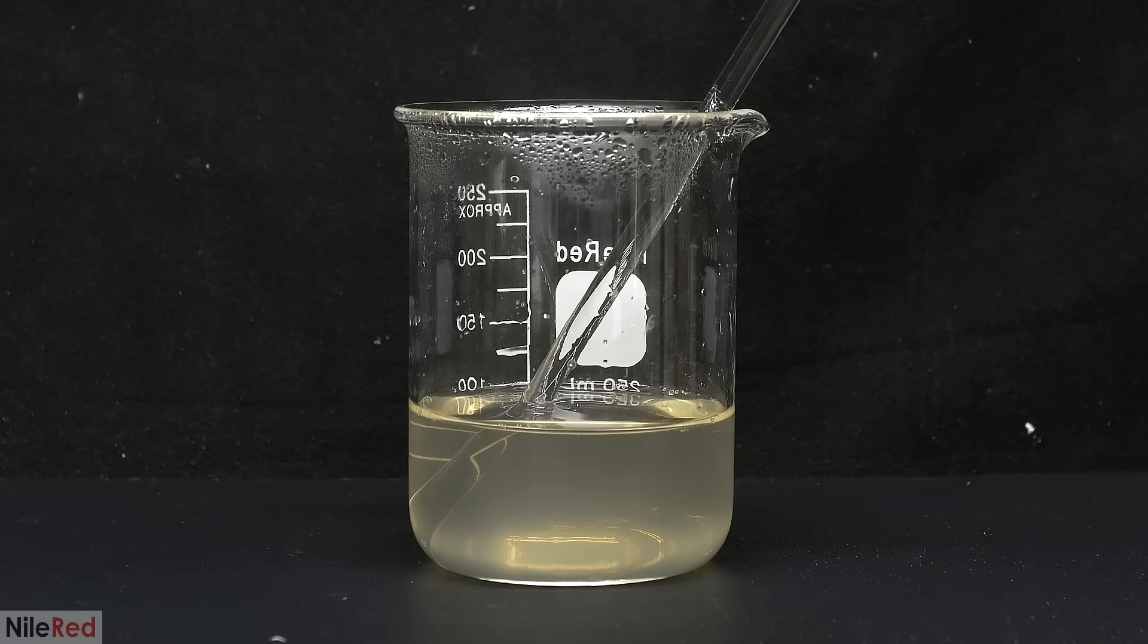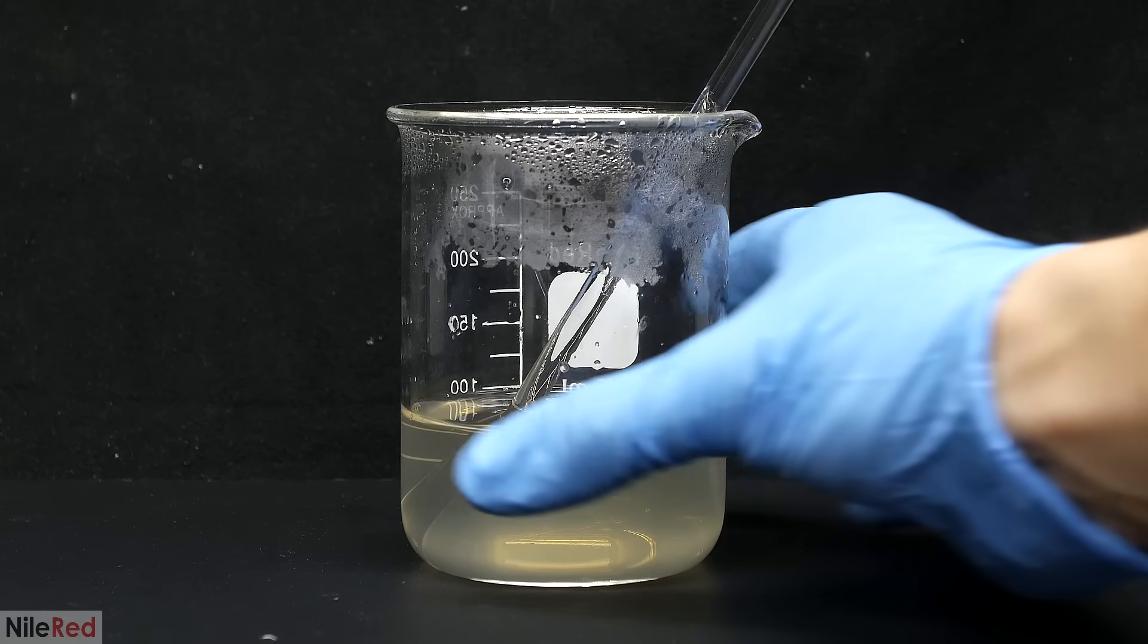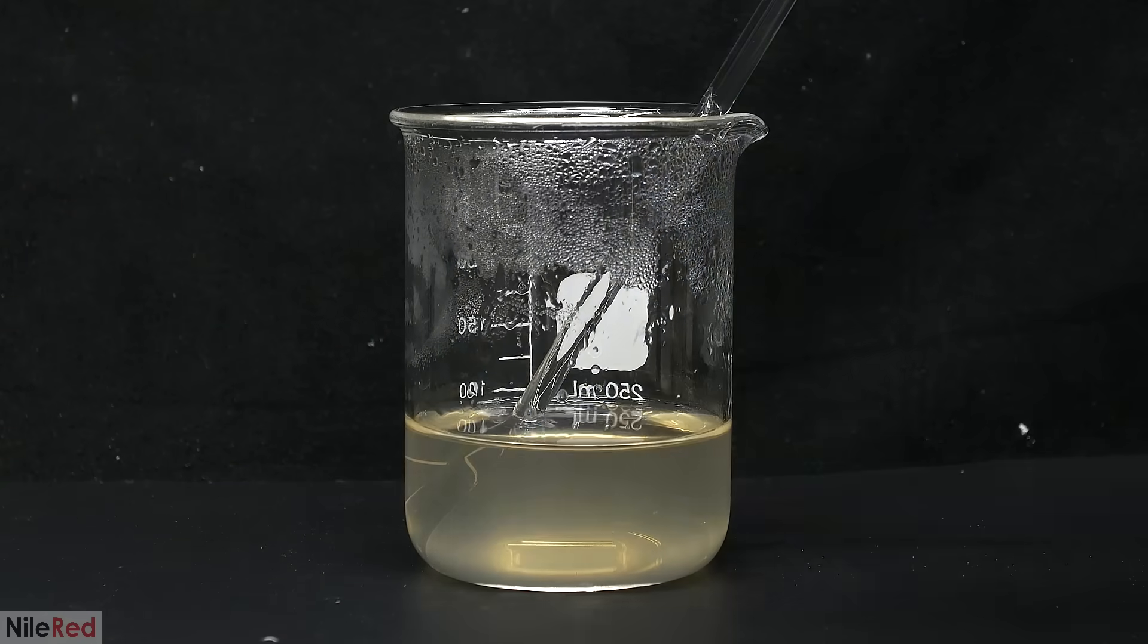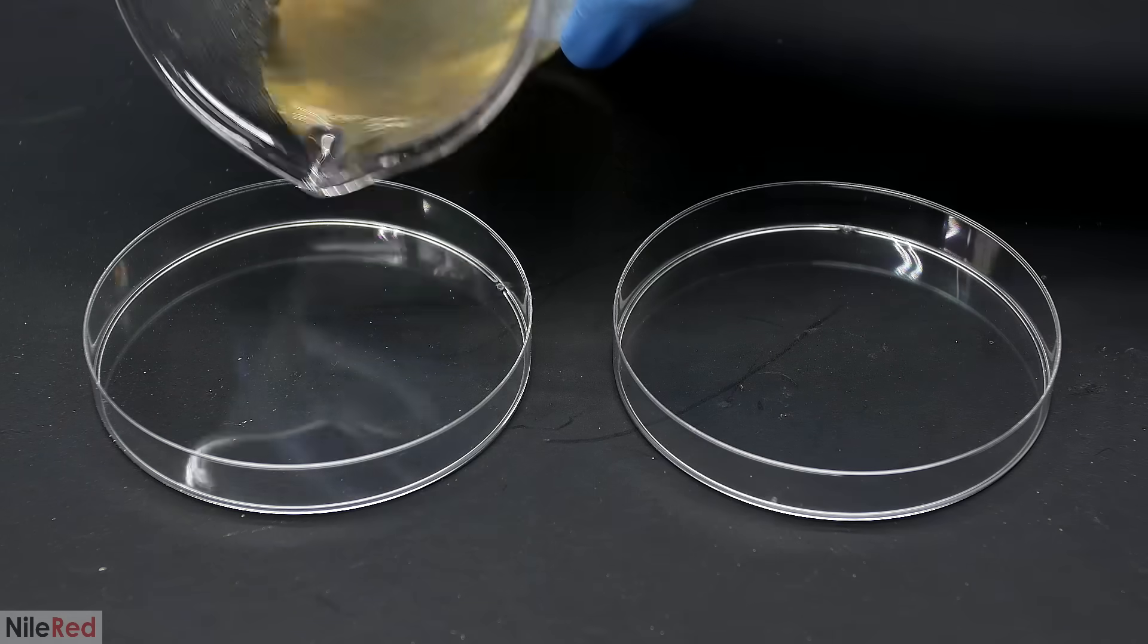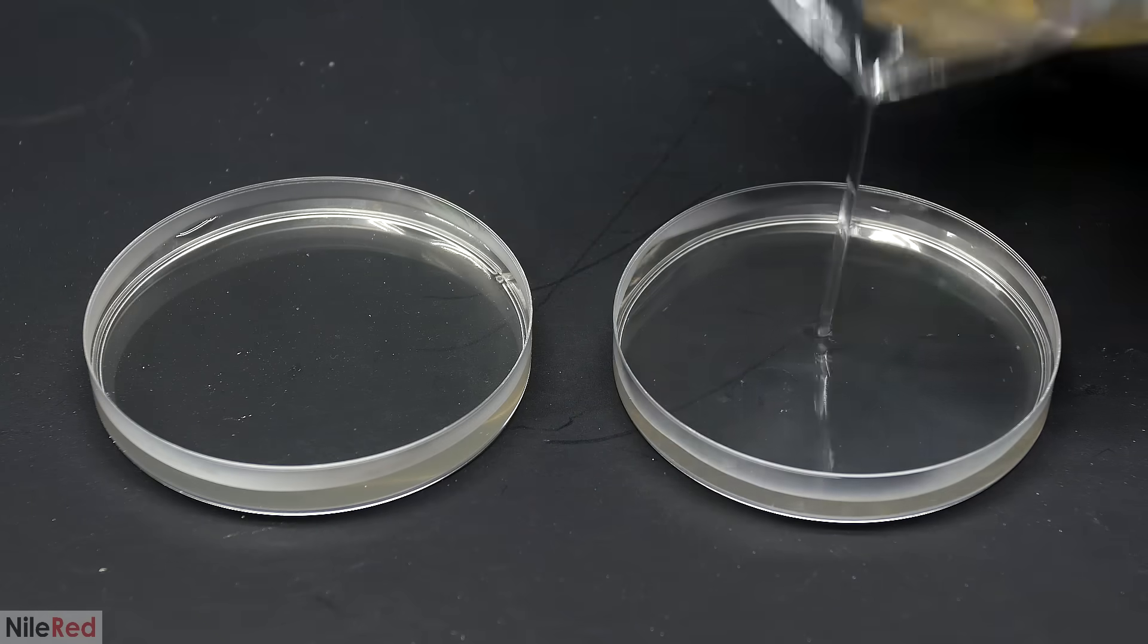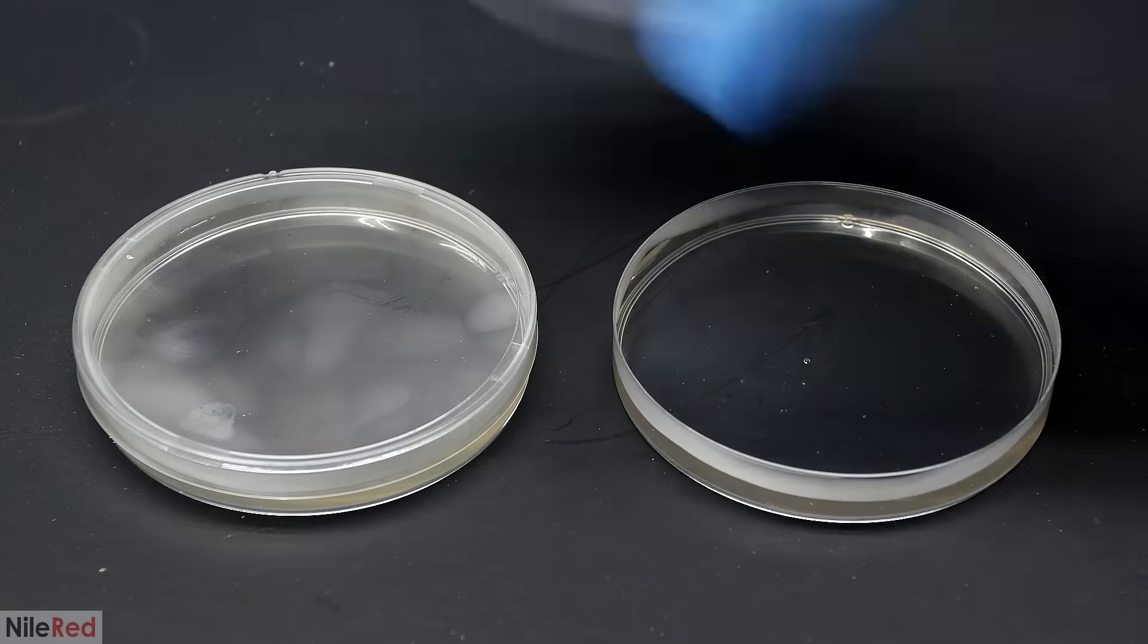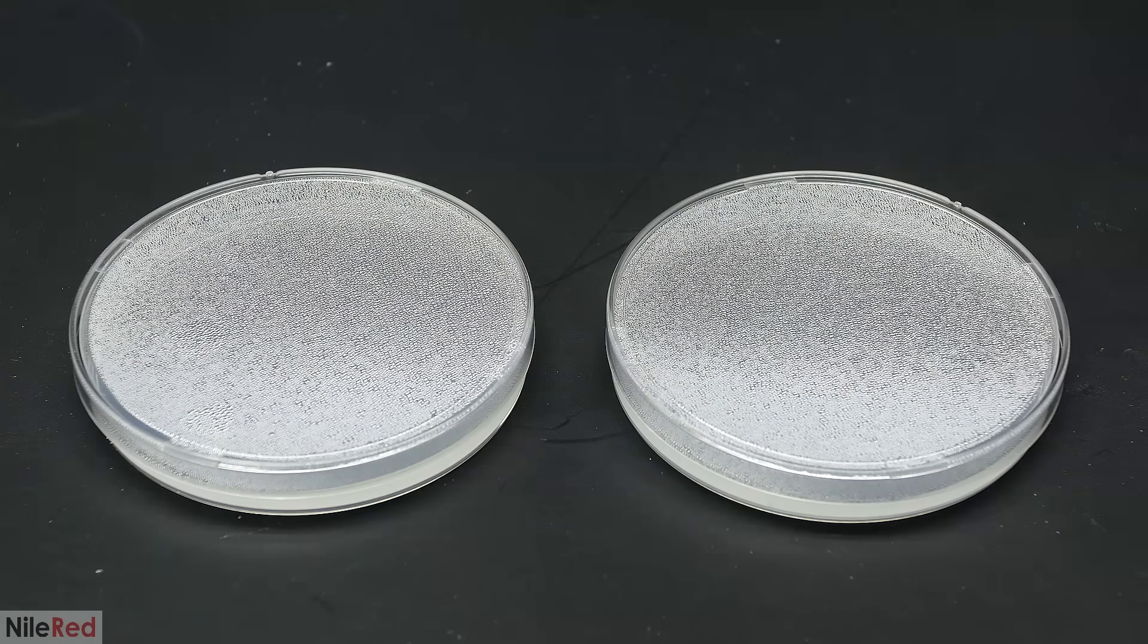All of the agar dissolves, and now we need to wait for it to cool to around 50 or 60°C. We don't need a thermometer or anything for this, and we just need to wait until it stops hurting to touch it. When I reach this point, it's ready to be added to the petri dishes. I fill each dish about halfway and then quickly cover the top. I do this because I don't want any potential contaminants falling in, and I also don't want the water evaporating off. As the plates cool, the agar will slowly solidify.